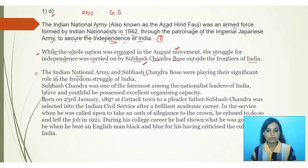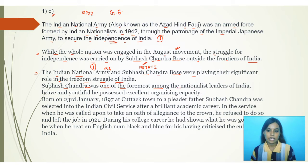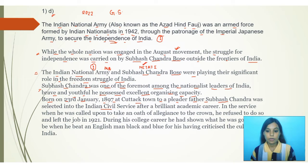The Indian National Army and Subhash Chandra Bose played a significant role in the freedom struggle of India. Subhash Chandra Bose was one of the foremost nationalist leaders of India — brave and youthful, he possessed excellent organizing capacity and managed the entire INA. He was born on 23rd January 1897. After a brilliant academic career, he was selected into the ICS — the Indian Civil Service. When called upon to take an oath of allegiance to the crown, he refused and left the job in 1921.